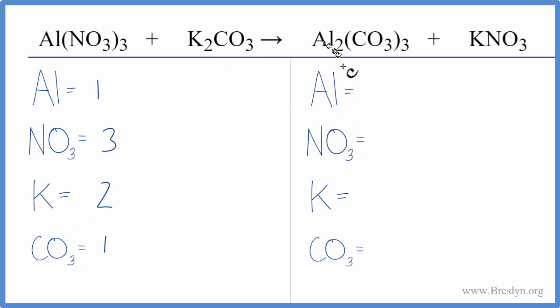On the product side, we have two aluminum, one nitrate, one potassium, and then one carbonate times three. We have three of those.